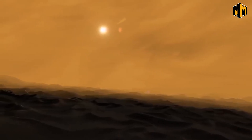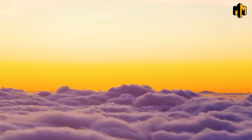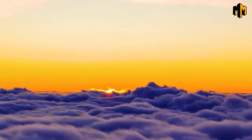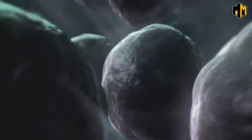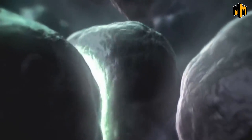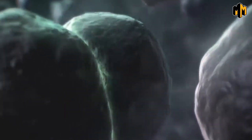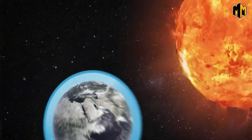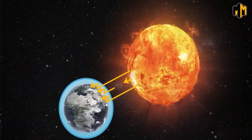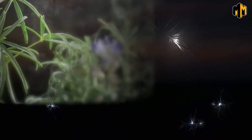The greenhouse effect is a natural process that keeps the Earth's surface warm enough for life to thrive. It is caused by certain gases in the atmosphere, such as carbon dioxide and methane, that trap heat from the sun. Without the greenhouse effect, the Earth's surface would be too cold for most living organisms to survive.